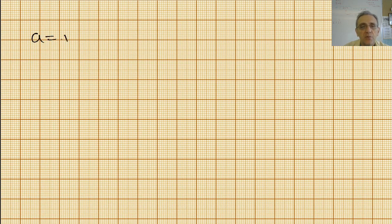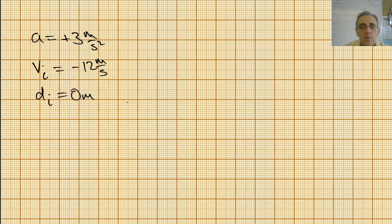Today we're going to plot a graph with acceleration equal to positive 3 meters per second squared. We're going to do all three graphs, and I'm also going to need my initial velocity, which is going to be negative 12 meters per second, and my initial position is going to be 0 meters. I need these initial conditions, or else my three graphs are not deterministic.